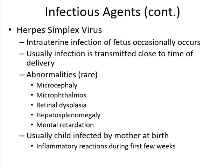Another infectious agent is herpes simplex virus. This virus leads to intrauterine infection of the fetus, though this occasionally occurs. Infection is usually transmitted close to the time of delivery. The abnormalities are relatively rare and include microcephaly, microphthalmos, retinal dysplasia, hepatosplenomegaly, and mental retardation. The child is usually infected by the mother, causing an inflammatory reaction during the first few weeks.